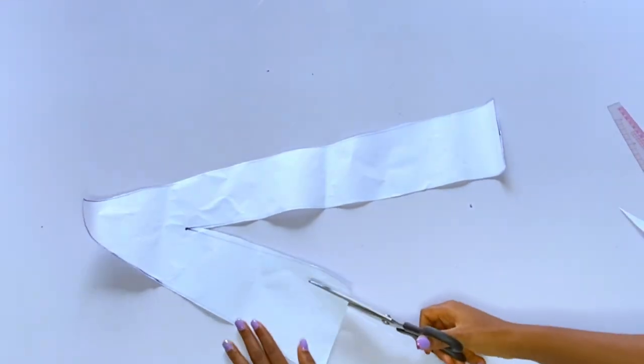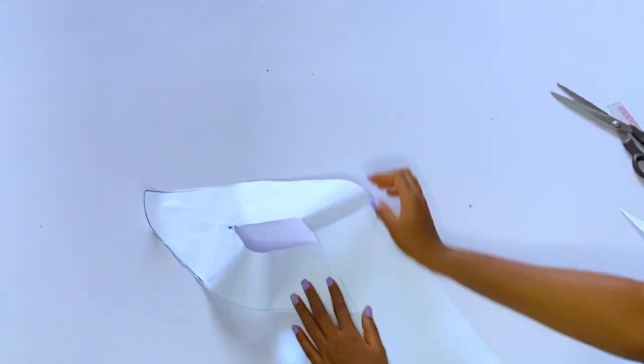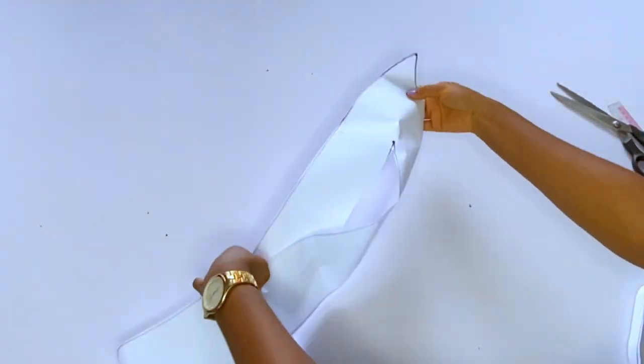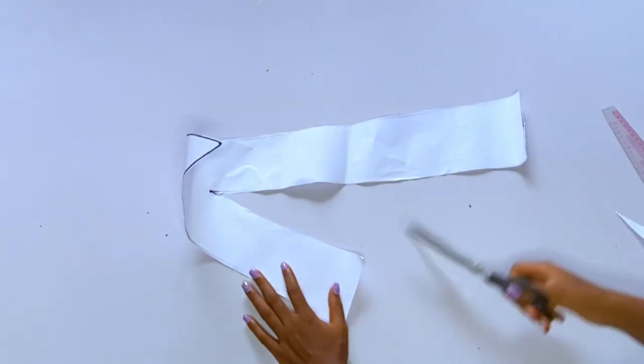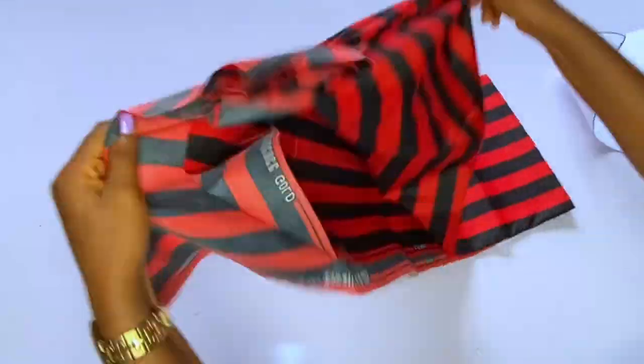The next thing that I will do is that I will reduce the width of the smaller A, the inner A. I feel like the width of the inner A is too much, so I reduce it from the inside so that the triangular shape there will be wider. Now I'll go ahead and cut this out on my fabric.